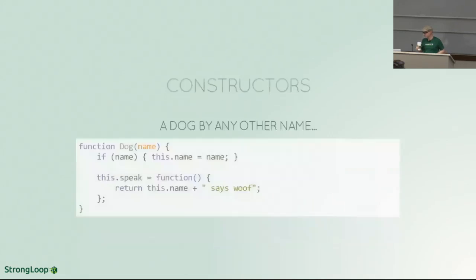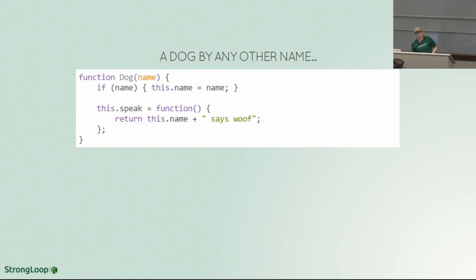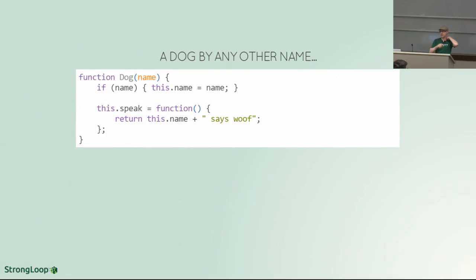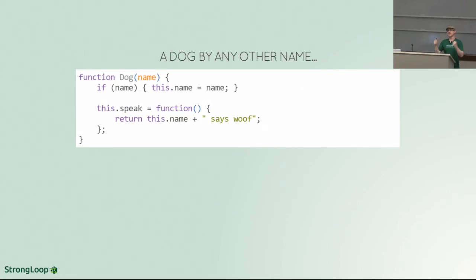So let's talk about object constructors. I've got a function with a capital D for Dog. It accepts a name, and inside it says: if you gave me a name, I'll assign it to the current instance; otherwise it'll be undefined. And I'll assign a function to this.speak. The capital D is purely by convention — you don't need to do that. Every single time you create a function, you've created a constructor. This is very key to JavaScript's object model: it is not classes and instances. We don't have classes. We have objects, and we create objects from other objects and chain them together.